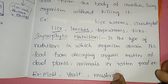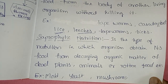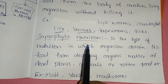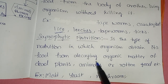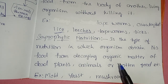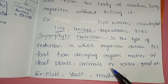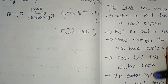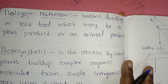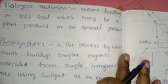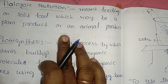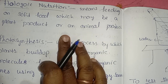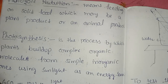Saprophytic nutrition — organisms obtain food from decaying organic matter of dead plants, animals, or rotten food. They decompose and break down molecules outside their body, then absorb nutrients. Examples: molds, yeast, mushrooms. Holozoic nutrition — feeding on solid food, whether plant or animal product; organisms digest it, absorb nutrients, then expel waste. All such organisms come under holozoic nutrition.